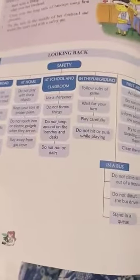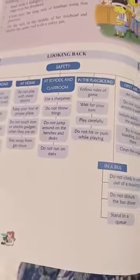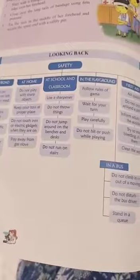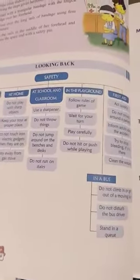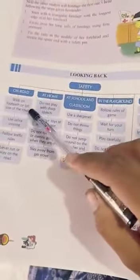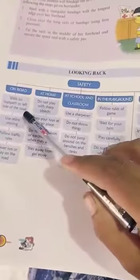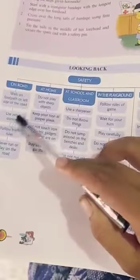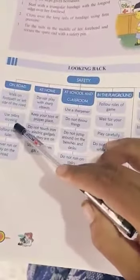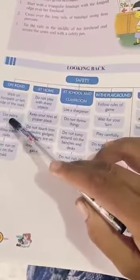Safety means to stay away from danger. Some safety rules for different places: on the road, walk on the footpath or left side of the road. Use the zebra crossing while you cross the road.